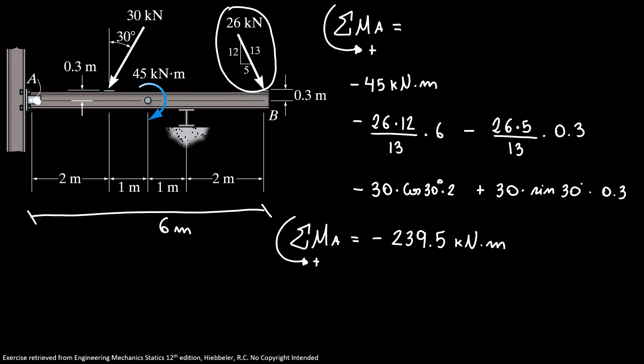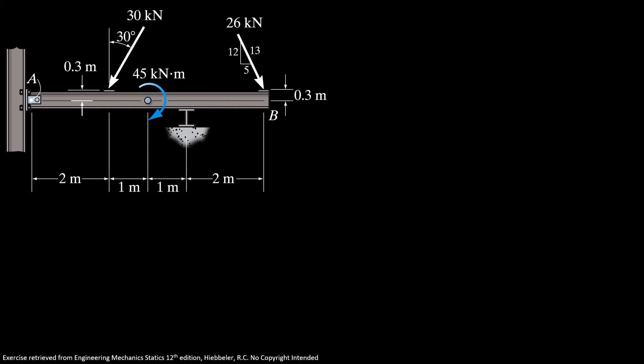If it's minus, it's because it's going clockwise. Now we have a force that is pointing down minus 50 kilonewtons and pointing to the left equals minus 5 kilonewtons and generates a moment that equals minus 239.5 kilonewton meter.